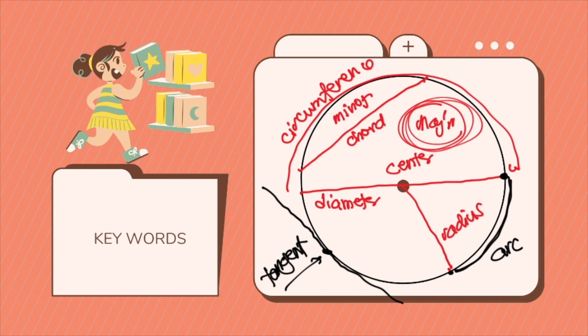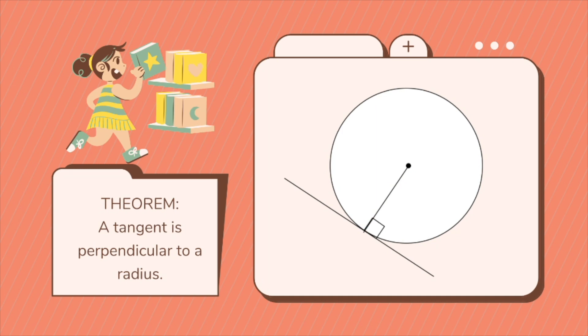Now let's go through the different circle theorems. The first theorem is that a tangent is perpendicular to a radius. Since our radius is touching one point of your circumference and your tangent is also touching one point of your circumference, the angle that both your radius and your tangent line form is 90 degrees.